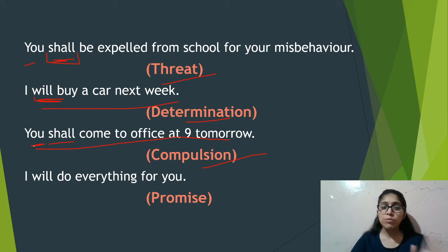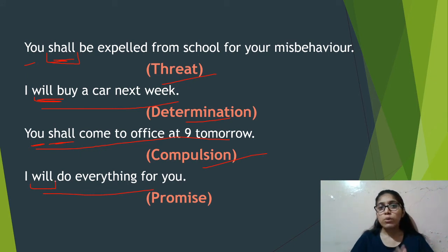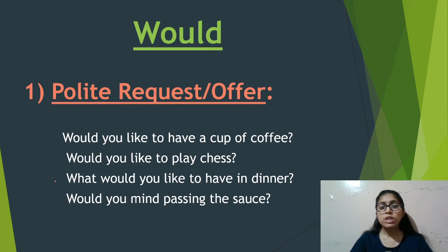'You shall come to office at 9 tomorrow' — you are showing compulsion. It is a compulsion, so you used shall with 'you' instead of will. If you just wanted to show simple future, you would use will, but since it's compulsion, you use shall. 'I will do everything for you' — you are making a promise, so instead of shall with I, you use will. These are the uses of will and shall.